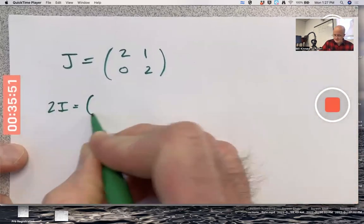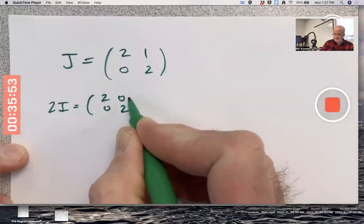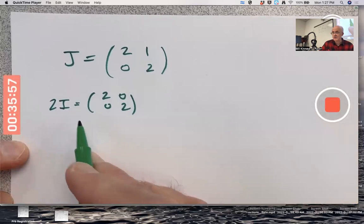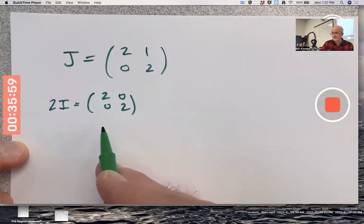Two times the identity matrix. You remember the homework problem where I said a constant times the identity matrix is only similar to itself? That was a homework problem last week or so.